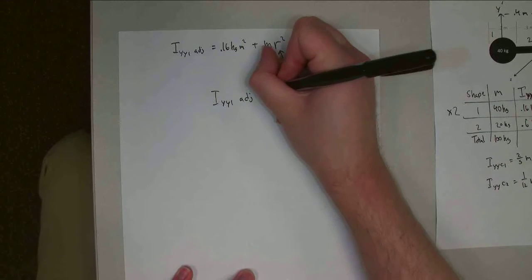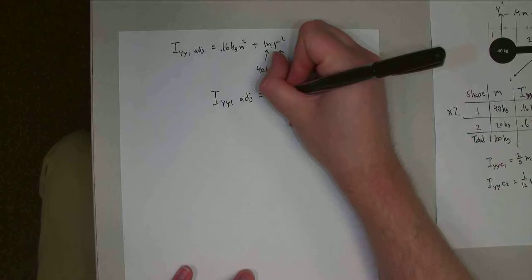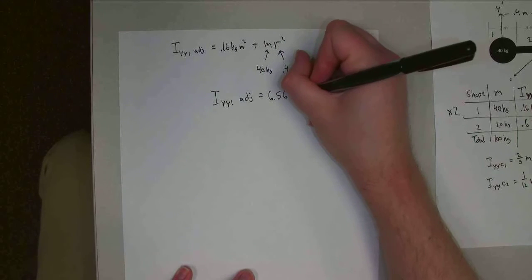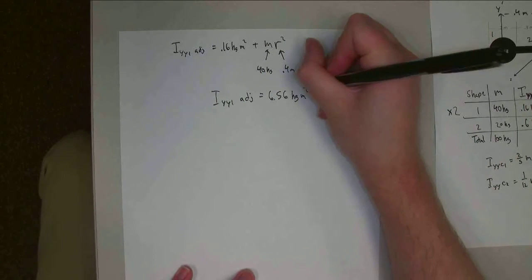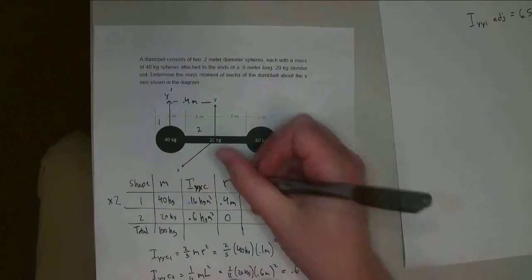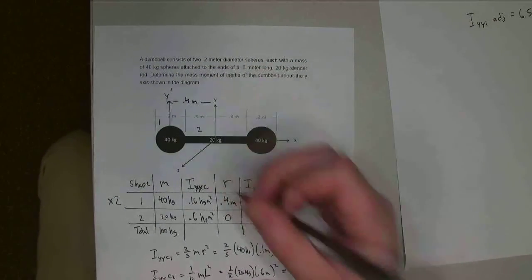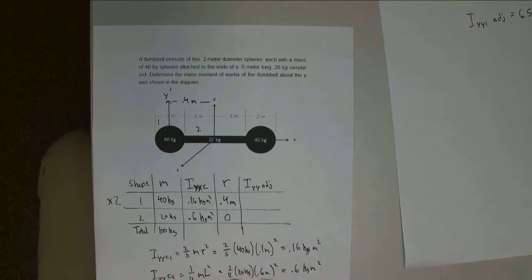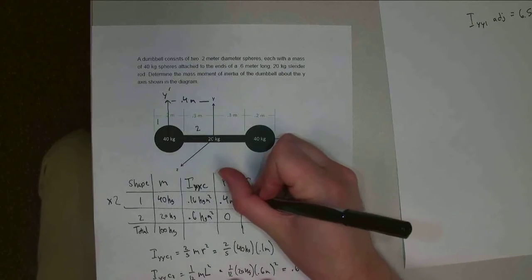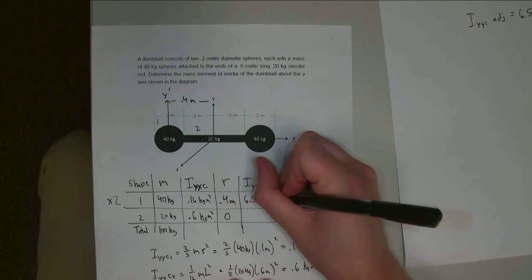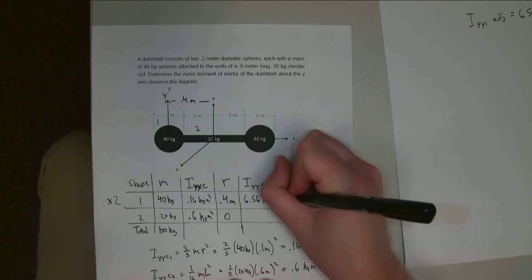And so you will notice that just moving these spheres out to the end greatly increases the mass moment of inertia. So 6.56 kilogram meters squared.